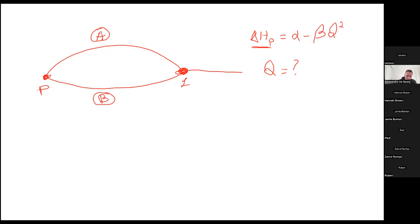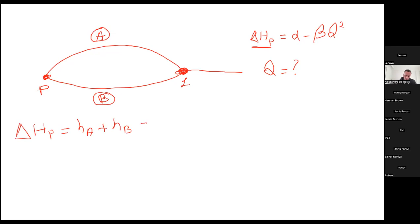It means that delta H of the pump will be equal to the head loss in pipe A plus the head loss in pipe B. But the system is in parallel, so HA will be equal to HB — which means it will be equivalent to 2 times HA.